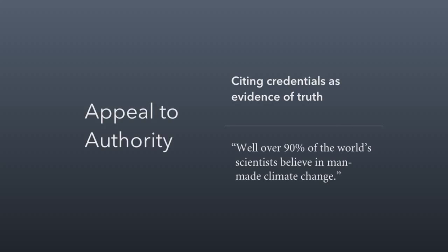Appeal to authority is where you cite credentials as evidence of truth. 'Well over 90% of the world's scientists believe in man-made climate change.' That doesn't logically prove the existence of climate change — the proof should be evaluated on its own merits, not on the idea that authority figures are in agreement with it. Appeal to nature is another kind of appeal to authority — the idea that because things are naturally that way, that's the way they should be. It's popular in food, for example: 'Natural food is best, therefore genetically modified crops are bad.' But smallpox is natural, and we got rid of it because it wasn't very good.